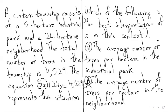The total number of trees in the township is 4529, and the equation 5x plus 24y equals 4529. We know 24 hectare neighbourhood gives us 24y, and 5 hectare industrial park gives us 5x. So it looks like x represents how many trees there are per hectare — the average number of trees per hectare in the industrial park.